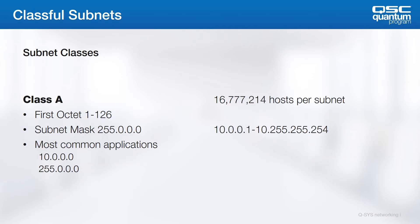When subnets were originally specified, they were what we refer to now as classful subnets — each range was specifically defined. A lot of the IP schemes we see now are holdovers from those original definitions. Class A networks are defined as having first octets 1 through 126 with a subnet mask of 255.0.0.0. The most commonly used subnet in the range is 10.0.0.0. Note that these subnets have up to almost 16.8 million possible hosts — that's never done these days, so if you've seen it, it's mostly in the form of a more restrictive subnet.